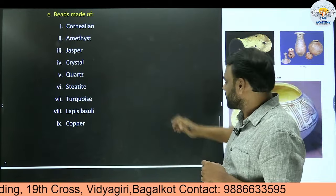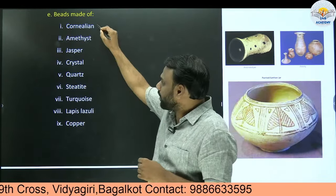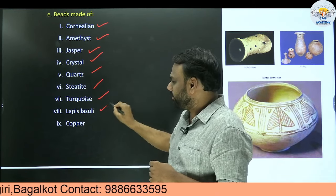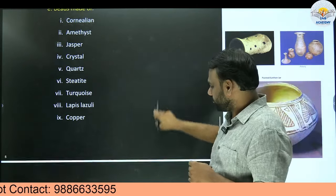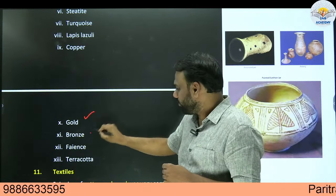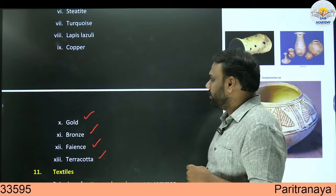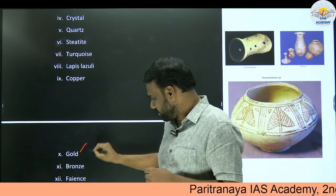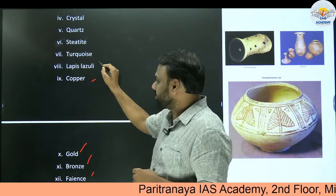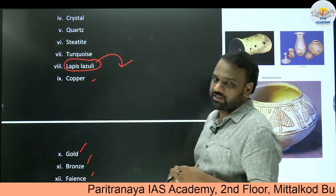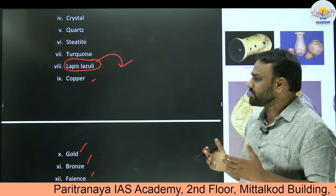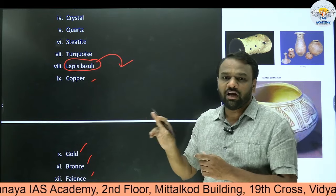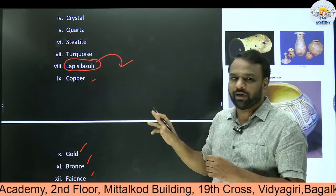Beads were made up of various materials: carnelian, amethyst, jasper, crystal, quartz, steatite, turquoise, lapis lazuli, copper, gold, bronze, faience, and terracotta. Among these, the important materials include gold, bronze, faience, copper, and one more important one — lapis lazuli. Lapis lazuli appears in multiple contexts, so it is important to understand that Indus Valley civilization people were aware of lapis lazuli and used it to prepare beads.